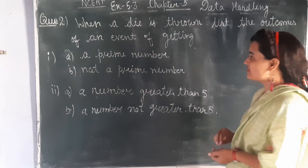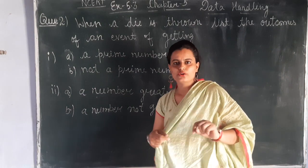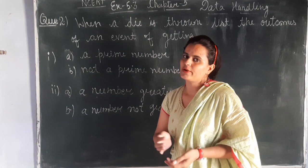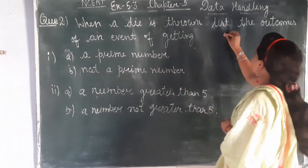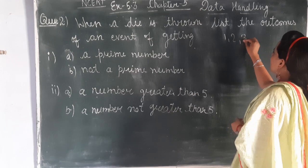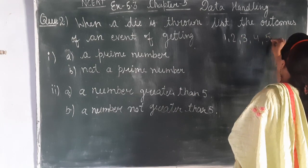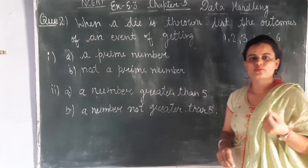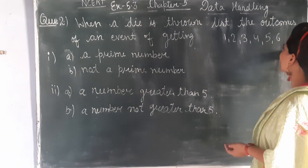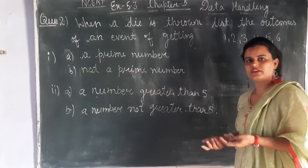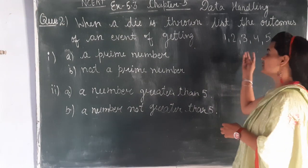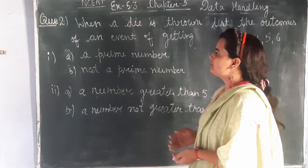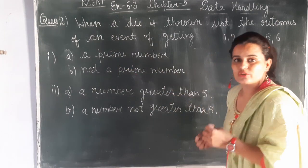Now, all of you have thrown a die — you all play Ludo. You know which numbers are on a die: one, two, three, four, five, and six. These are the numbers on the die. This is the total outcomes for throwing a die.